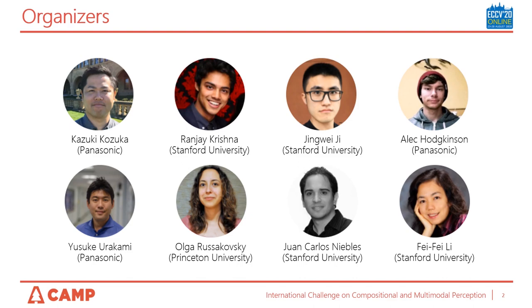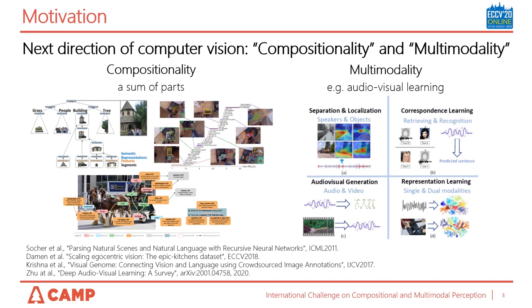In our workshop, we will discuss Compositionality and Multimodality in Computer Vision. We understand the world as the sum of parts, so the representation of the whole should be composed of representations of its parts. We understand the scene by components, a 3D shape by parts, and activity by events. We hypothesize that intelligent agents also need to develop compositional understanding.